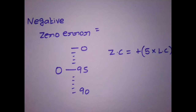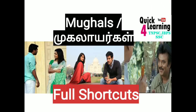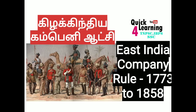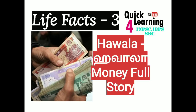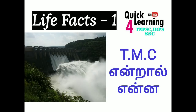We will give you a fact: one astronomical unit is 1.496 × 10 to the power 11 meters; one light year is 9.467 × 10 to the power 15 meters. So we will give you a fact — in this class, we will see the video. Okay, thank you.